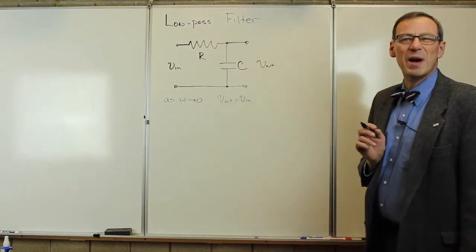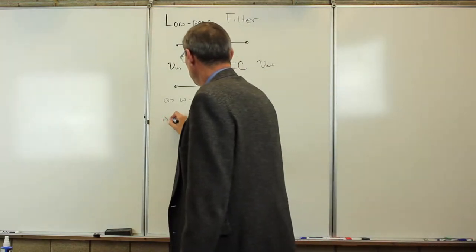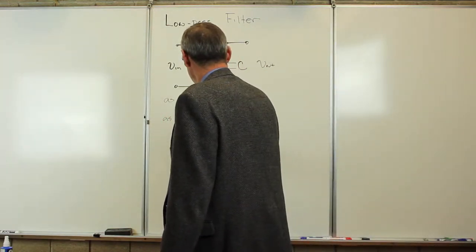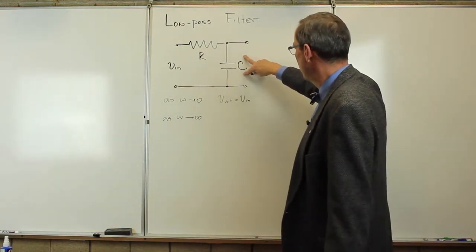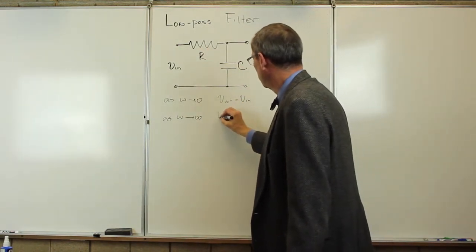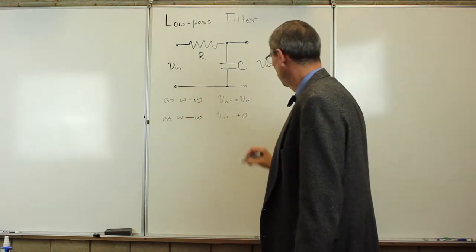That's where the term low-pass comes from. If we take omega very large, then here this becomes essentially a wire, and there's no output voltage, so V out goes to zero.